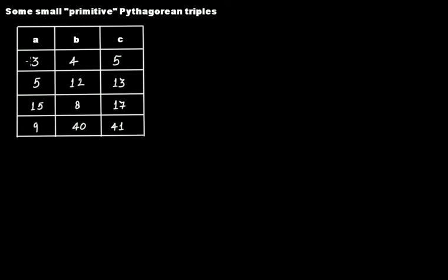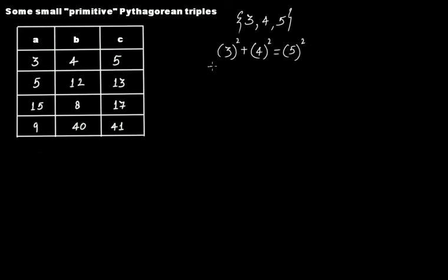We have four sets of three positive integers which we say are Pythagorean triples. Take the first one: 3, 4, 5. Then 3 squared plus 4 squared should equal 5 squared. If you solve it you get 9 plus 16 should equal 25 — that is 25 equals 25. Yes, it is a Pythagorean triple.